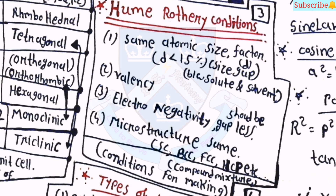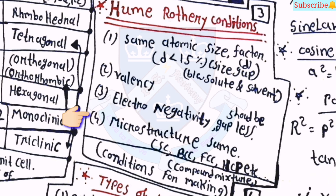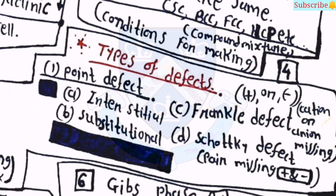The next topic from material science is the Hume-Rothery rules. There are four conditions for solid solution formation: first, atoms should have the same atomic size with a size factor difference less than 15%; second, valency should be the same; third, electronegativity difference should be less; and fourth, crystal structure must be the same — whether SC, BCC, or FCC, both atoms must share the same structure. These are the conditions for forming a compound mixture.